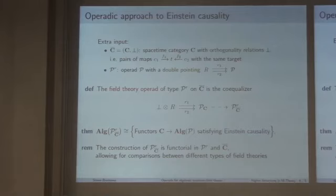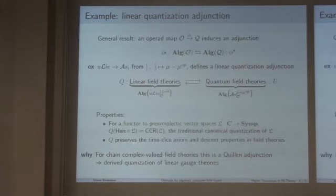The construction of this operad is functorial in both the double pointed operads and the orthogonal categories, which allows us to compare different field theories. Which is why this is interesting. There is a general result in operad theory. If you have a map between two operads, you get an adjunction between their algebras. One of these maps is easy, it's a pullback which is readily defined. The other one you have to work for. But that is also the more interesting one.